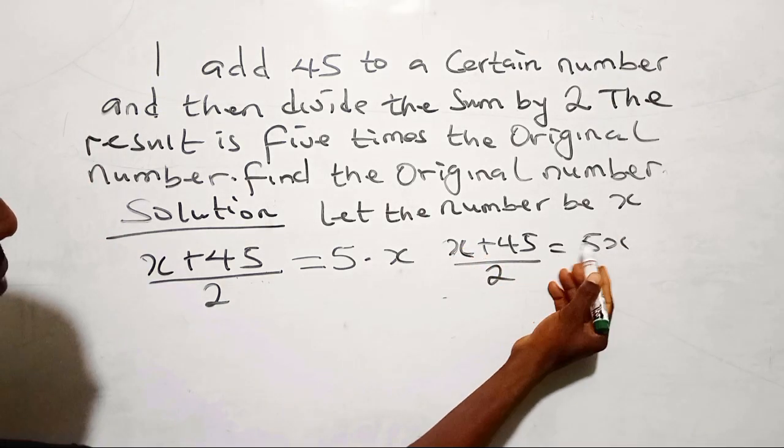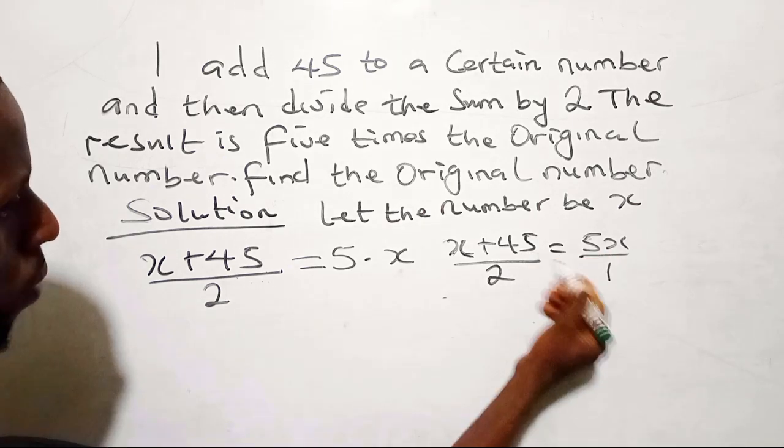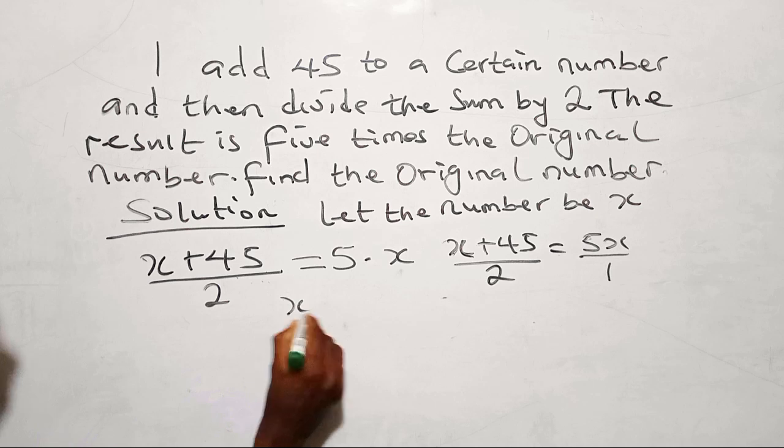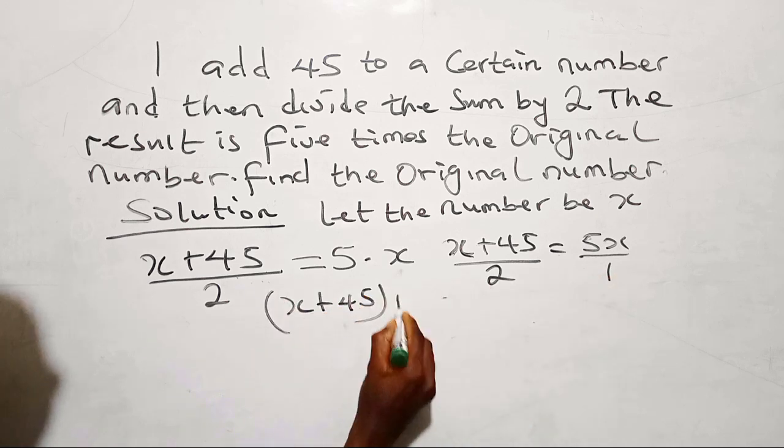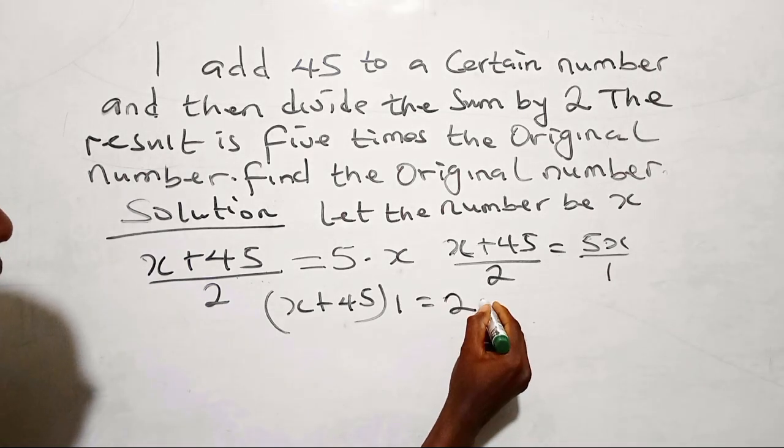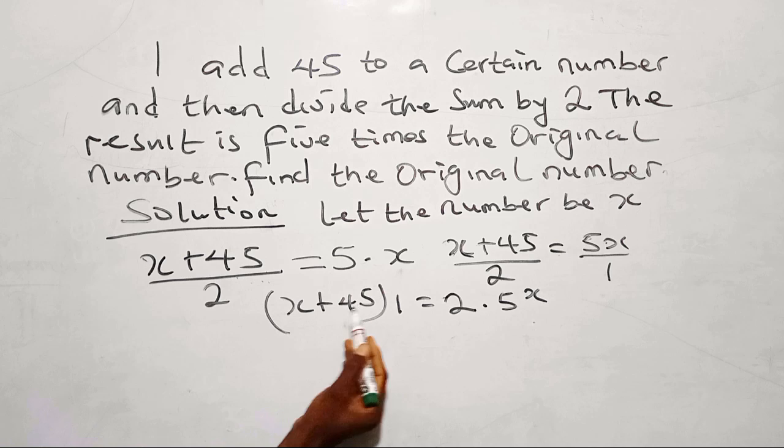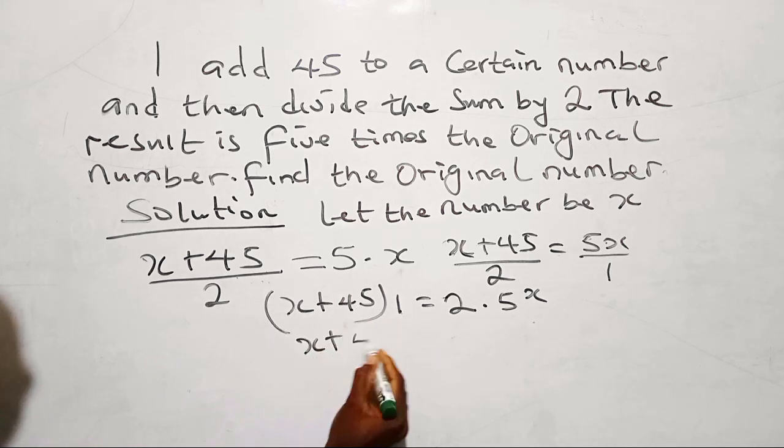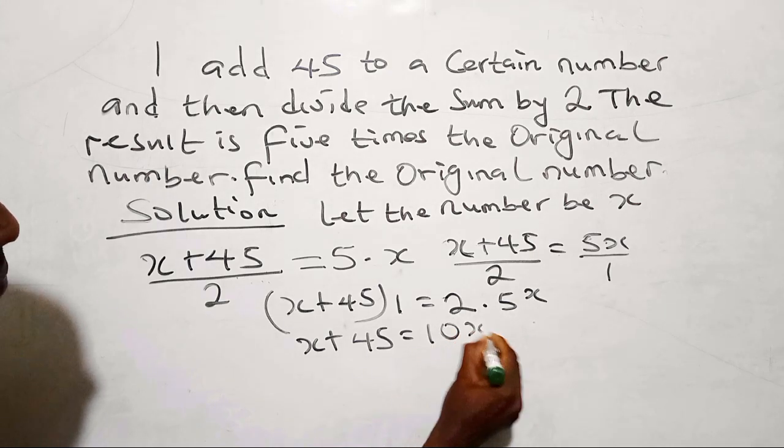Now that you have equals 2 in between these two sides, you can just put over 1 and cross-multiply. So when I cross-multiply, I have this to be x plus 45 times 1 equals 2 times 5x. So when you open this up, you still have this to be x plus 45 equals 2 times 5x is 10x.